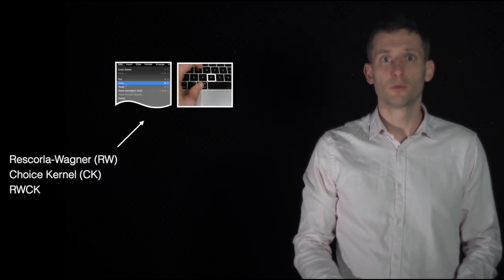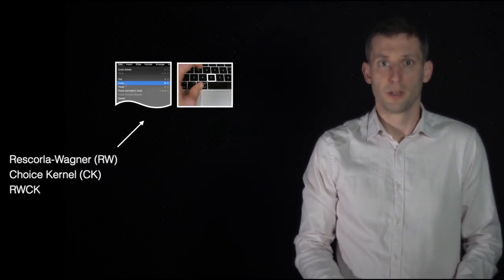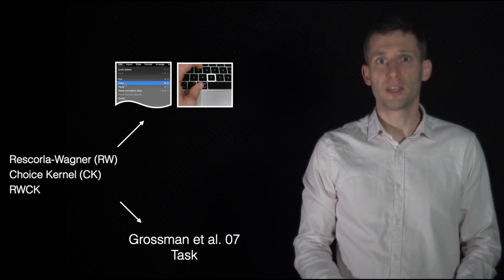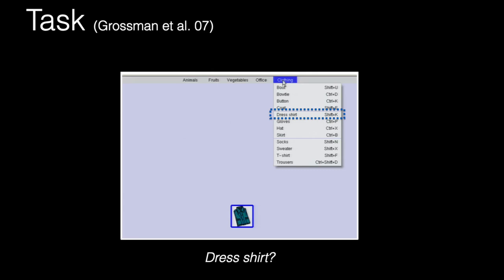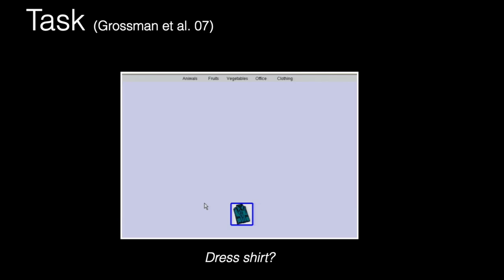One of our contributions is to apply these models in the context of shortcut adoption. Then, we tested this model on the task of Grossman et al. In this task, the stimulus is an image and the participant has to execute the corresponding command. Without additional information, the participant explores the menu and clicks on the corresponding menu item. He can pay attention, or not, on the keyboard shortcut cue. With more practice, when the same stimulus will appear, the user might decide to use keyboard shortcut.